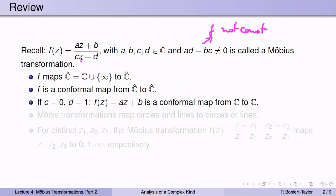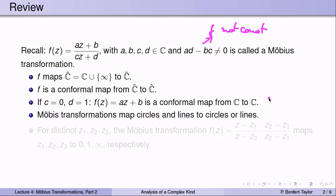If c is equal to zero, then we might just as well assume that d equals one, and then f(z) is of the form az + b. These are the conformal maps from C to C — they map infinity to itself, and therefore are conformal maps from C to C. Möbius transformations map circles and lines to circles or lines, meaning every circle is mapped to a circle or a line, and every line is mapped to a circle or a line.